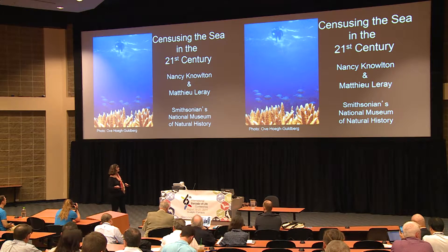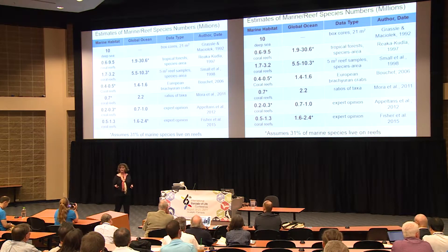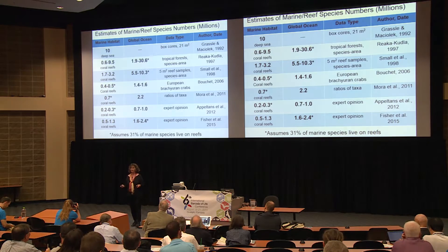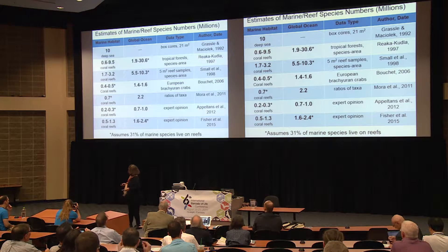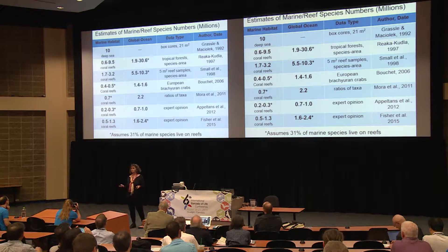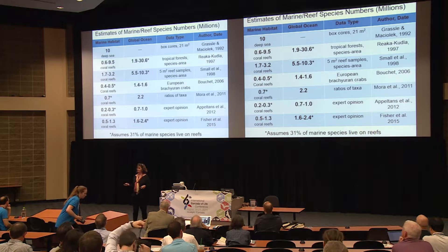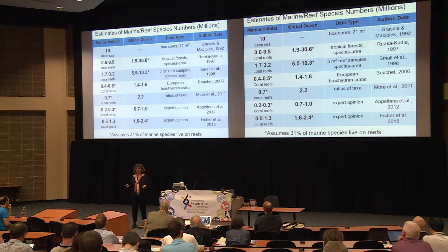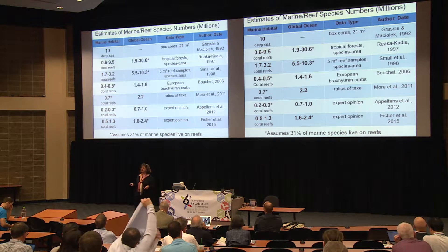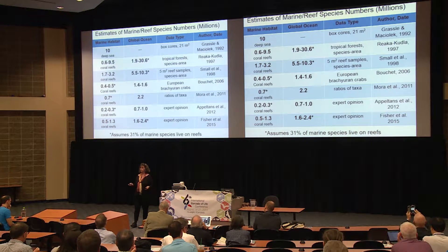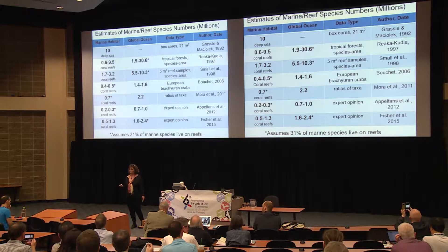The heart of this talk is about how many species live in the ocean and what we know about that. This slide is arranged chronologically. On the far left column you see the estimates for how many species live in the ocean based on habitat. Most of them are for coral reefs. Coral reefs are thought, based on the few groups where we have a pretty good understanding — namely fish — to harbor about 31% of all marine fish species.